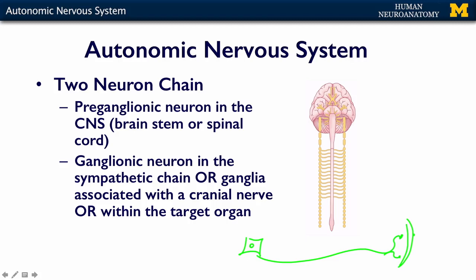In the autonomic nervous system, it's a two-neuron chain in that there is one neuron within the central nervous system — either the brain stem or the spinal cord — which then sends an axon out to a ganglion. In this example, we have the sympathetic chain ganglion. With the cranial nerves, there are specific ganglia associated with the different cranial nerves. Those ganglionic neurons are the ones that send the axon out to the target.